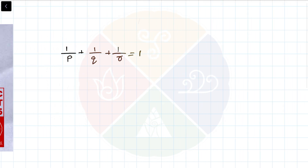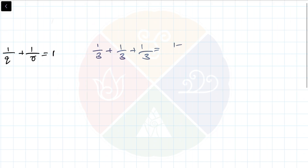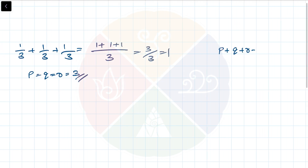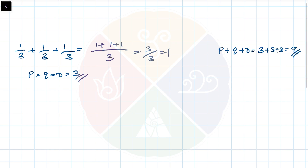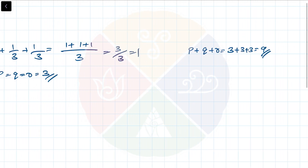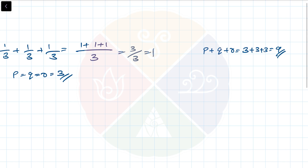The first example which comes to satisfy this condition is 1/3 plus 1/3 plus 1/3, because that is 1 plus 1 plus 1 over 3, which is 3/3, simply equal to 1. Therefore P equals Q equals R equals 3 is a solution, and P plus Q plus R = 3+3+3 = 9 is one of the possible values.